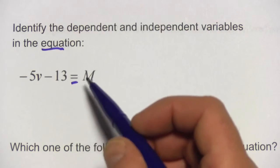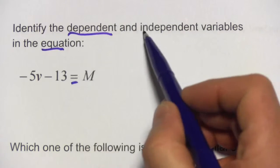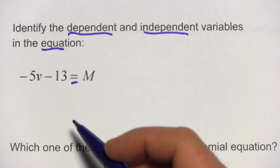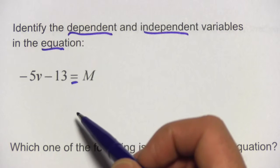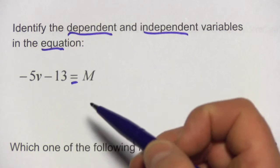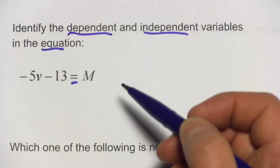In this problem, it's asking us to identify the dependent and independent variables. When you have an equation like this with two variables, we usually think of one of them as being independent and one of them as being dependent.